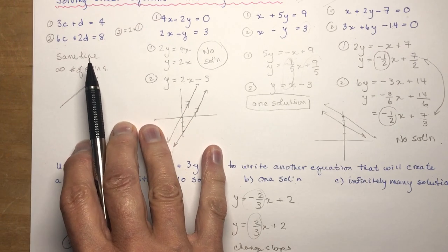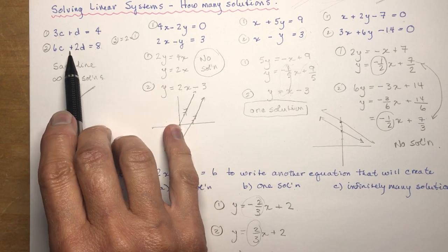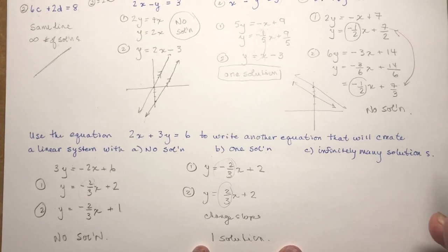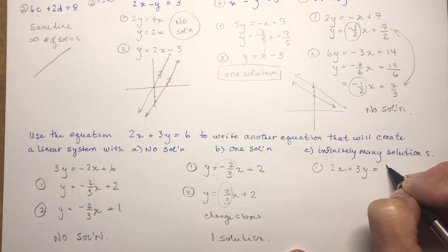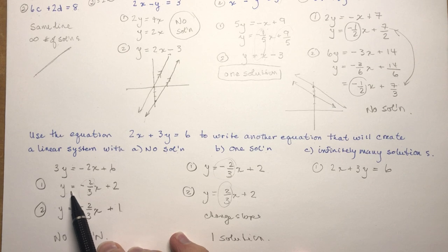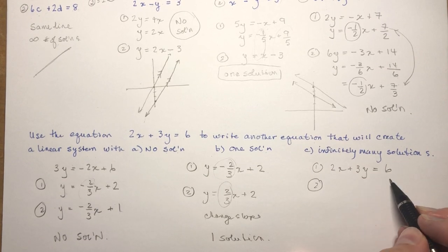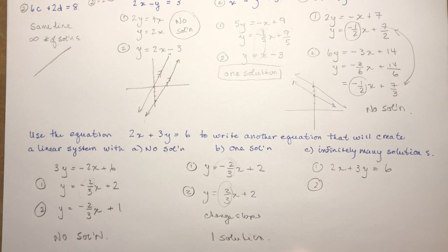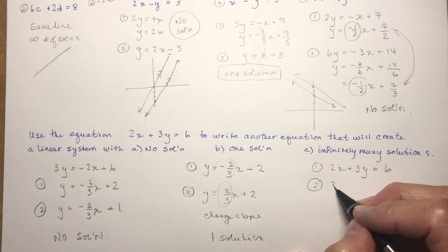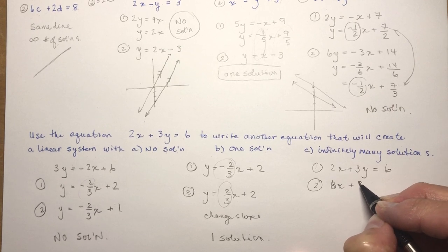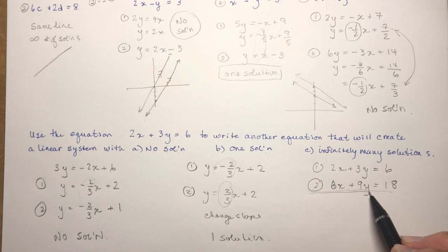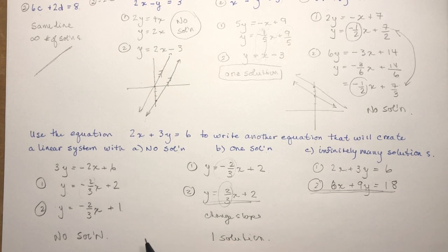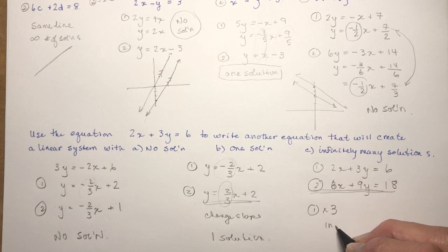For infinitely many solutions, as we saw earlier, the second equation must be a multiple of the first. Going back to the original equation 2x + 3y = 6, I'll multiply everything by 3: 6x + 9y = 18. This equation is just equation 1 times 3, so they represent the same line and there are infinitely many solutions.